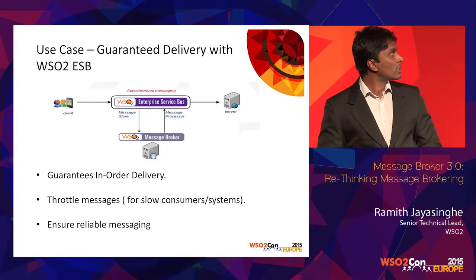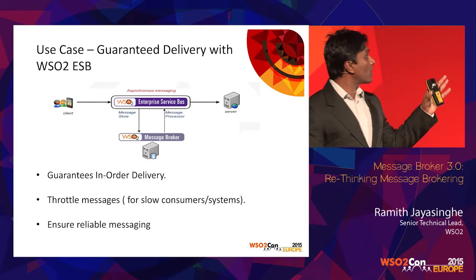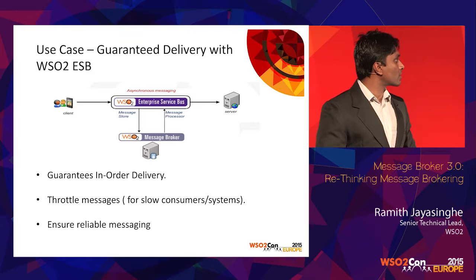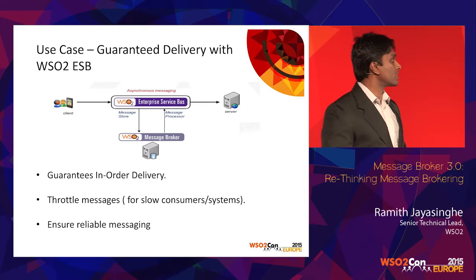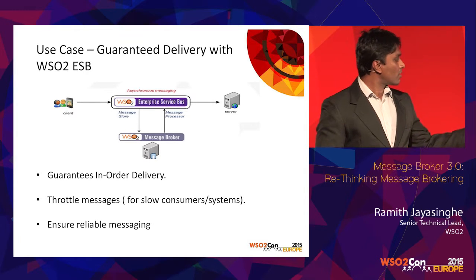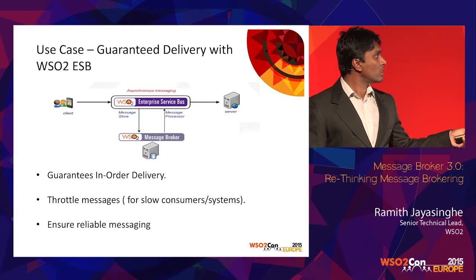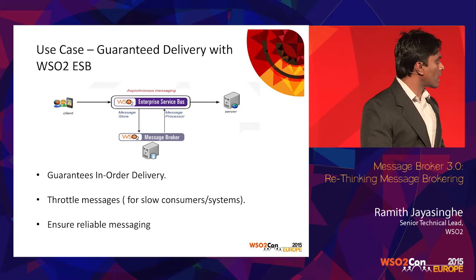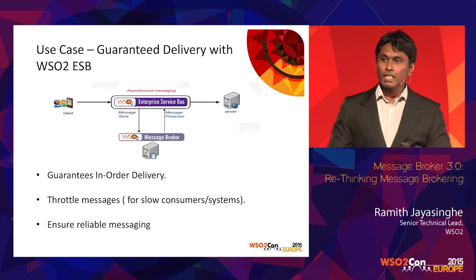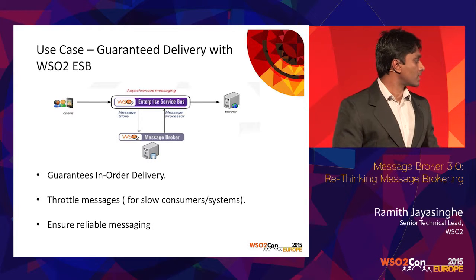A frequent use case combining ESB and the message broker is store-and-forward. A client keeps sending messages to ESB, which saves them in a queue in the broker. Another component in ESB retrieves those messages and forwards them to the back-end server. What you get is guaranteed in-order delivery, and if the server is slow you can rate-limit the messages being sent to the back-end servers.